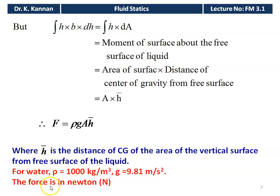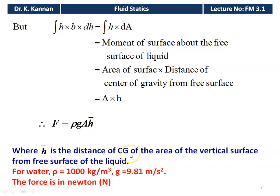For water, we take density ρ = 1000 kg/m³ and acceleration due to gravity g = 9.81 m/s², unless otherwise specified. If values are not given, we assume these values for water, and the force F is calculated in Newtons. This is the total pressure acting on the vertical surface, which depends on h-bar — the distance of the center of gravity from the free surface.